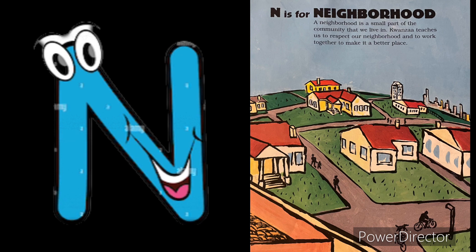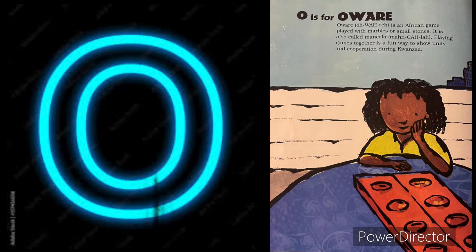N is for neighborhood. Neighborhood. O is for o-r-a. O-r-a.